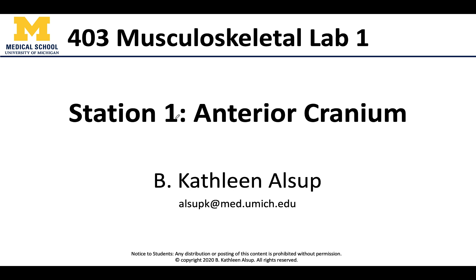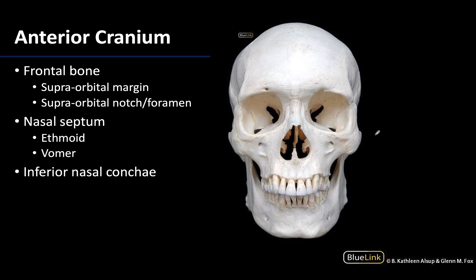Let us start with the anterior cranium — really it could be anterior skull, even though we are not going to focus on the mandible in this particular discussion. We are looking at an anterior view, and there are a few reasons why we know that. You can see the larger portions of the orbital openings, and the teeth are facing us. As we know just by looking at ourselves or our friends or family, teeth are going to be more anteriorly placed. So we're looking at a direct anterior view, and we're going to focus on the frontal bone.